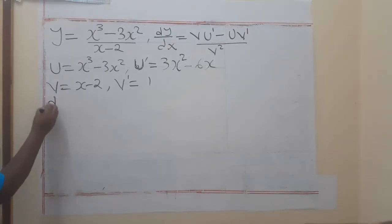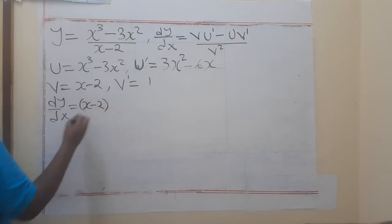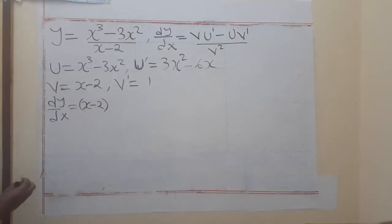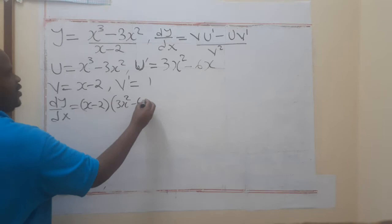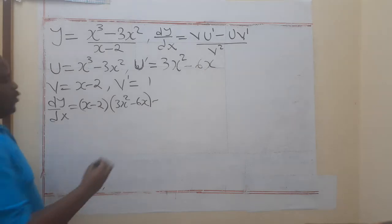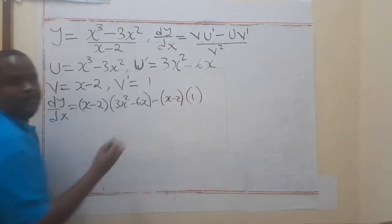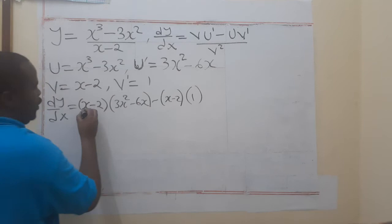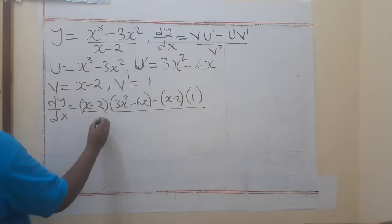By our formula, we have dy/dx. That is equal to - what is our v? x minus 2. Then what is u prime? 3x squared minus 6x. Minus what is my u? My u is x minus 2. And v prime is 1. Everything here should be divided by v squared, and our v is x minus 2 squared.